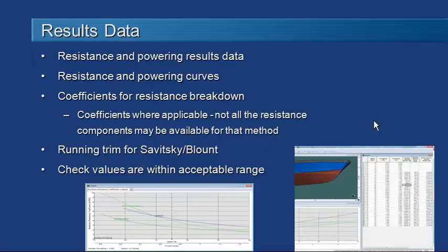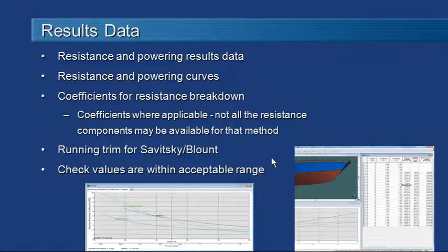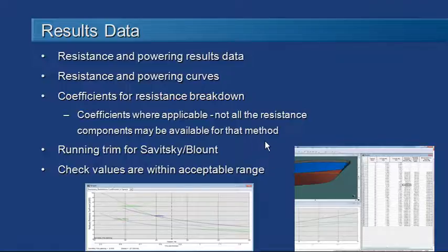To review the results of our resistance calculations for the regression methods, we can review the resistance and powering results in the data table or the results table, and we can also review the series of curves. Those curves show not just resistance and power but the individual components of resistance presented in non-dimensional coefficient form, so it's a good idea to review those coefficients and see how they're varying. They'll only be shown if those resistance components actually apply for that method.